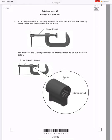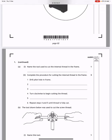We've got a picture of the g-cramp showing the screw thread and the internal thread. Name the tool used to cut the internal thread in the frame. Well that would be a tap.